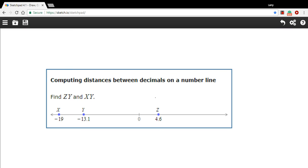In this problem, we are finding the distances between points on a number line. Some of these points have a positive value on the number line, some have a negative value, and they have decimals.